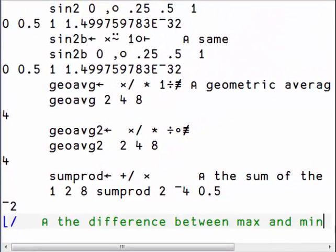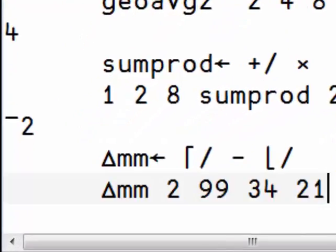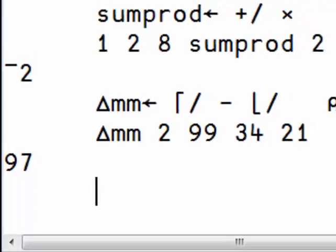Here we want the difference between the maximum and the minimum. We take the largest number and we subtract the smallest number. It is a fork with two derived functions.